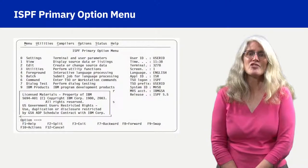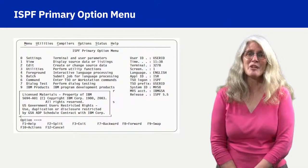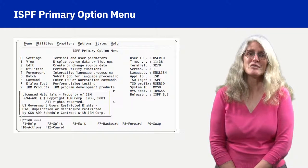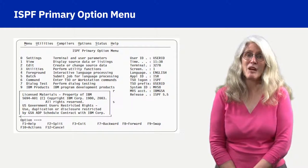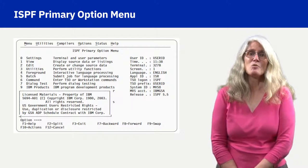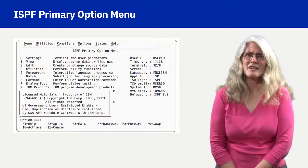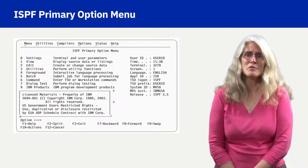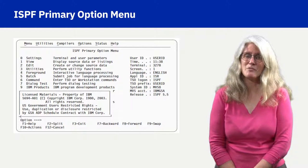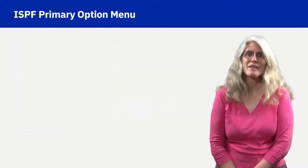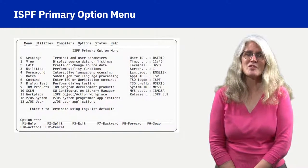The chart shows the default ISPF primary option menu. The default panel includes a Licensed Materials Message box. Pressing Enter will remove the box. Many sites customize this panel to minimally remove the Licensed Materials Message box from appearing.